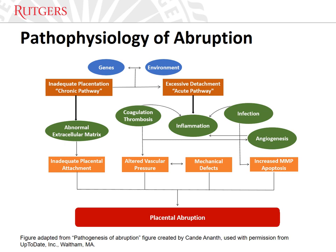Placental abruption is the end result of an acute process, or the culmination of long-standing chronic processes, or both. Chronic processes that predispose to abruption include thrombosis, inflammation, infection, and decidual and utero-placental vasculopathy. These processes lead to placental hypoperfusion and defective spiral artery remodeling, placental infarction, and shallow trophoblast invasion. Acute processes leading to abruption are largely the consequence of mechanical and shearing forces applied to the abdomen, with inciting events such as abdominal trauma or rapid decompression of the uterine cavity following amniotomy. Rupture of maternal decidual vessels leads to bleeding at the decidual-placental interface and detachment of the placenta from the uterus.